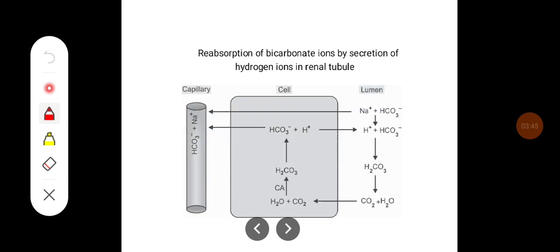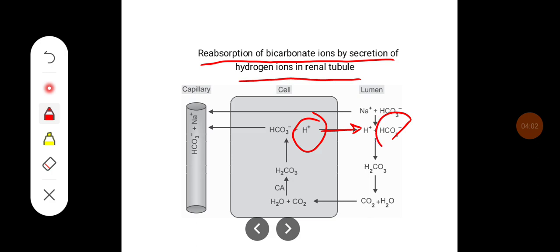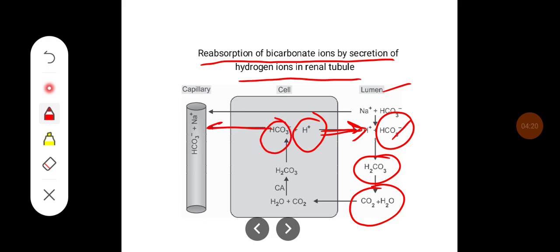This diagram shows the reabsorption of bicarbonate ions by secretion of hydrogen ions into the renal tubule. The hydrogen ions produced from carbonic acid are secreted and they combine with bicarbonate filtered in the lumen, forming carbonic acid, which in turn forms carbon dioxide and water that are reabsorbed. Thus, with the secretion of one H+ ion, one HCO3- ion is reabsorbed into the blood.